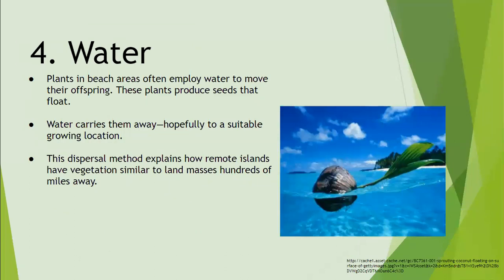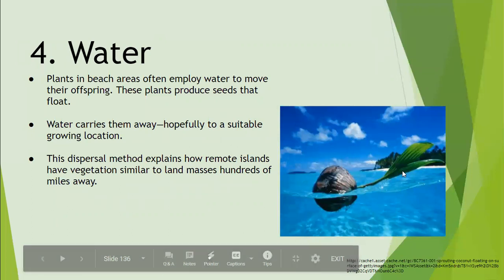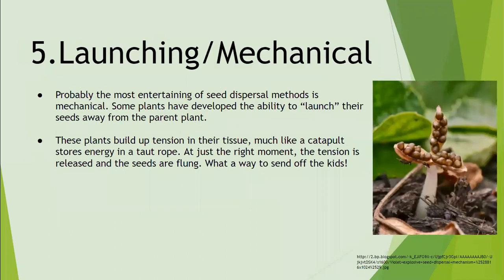Next is water. Plants in beach areas often use water to move their offspring — these plants produce seeds that float. This right here is a coconut seed, and it's floating; wherever it lands, the water carries it hopefully to a suitable growing location. This dispersal method explains how islands have vegetation similar to the mainland even though they are miles away.